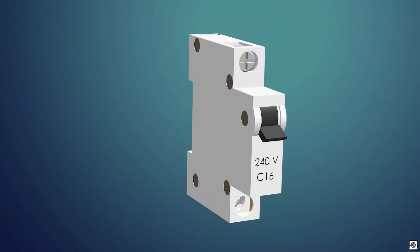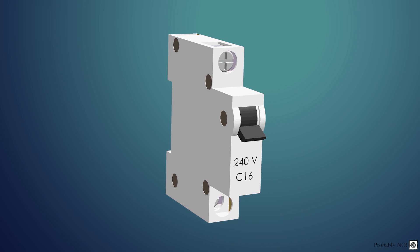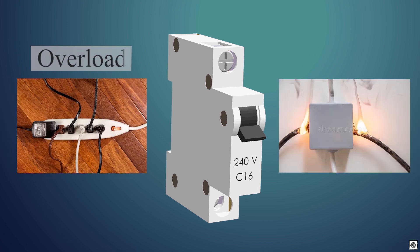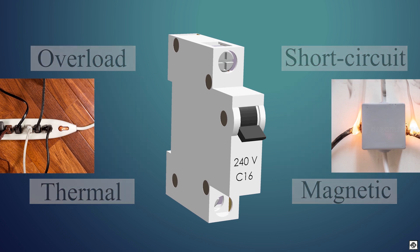These devices are known as miniature circuit breakers, or MCB in short. They are used for protection against overload and short circuit, and they have distinct mechanisms for both operations which we are going to explore.